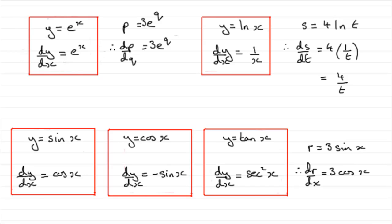So I hope that's given you some idea of how you can use these results. But as I said earlier, you've got to be careful. You can only use them at this level if you've got one letter. When we get a composite function — when it becomes more involved than just, say, x — then we're going to have to use the chain rule, which I'll be showing you later.